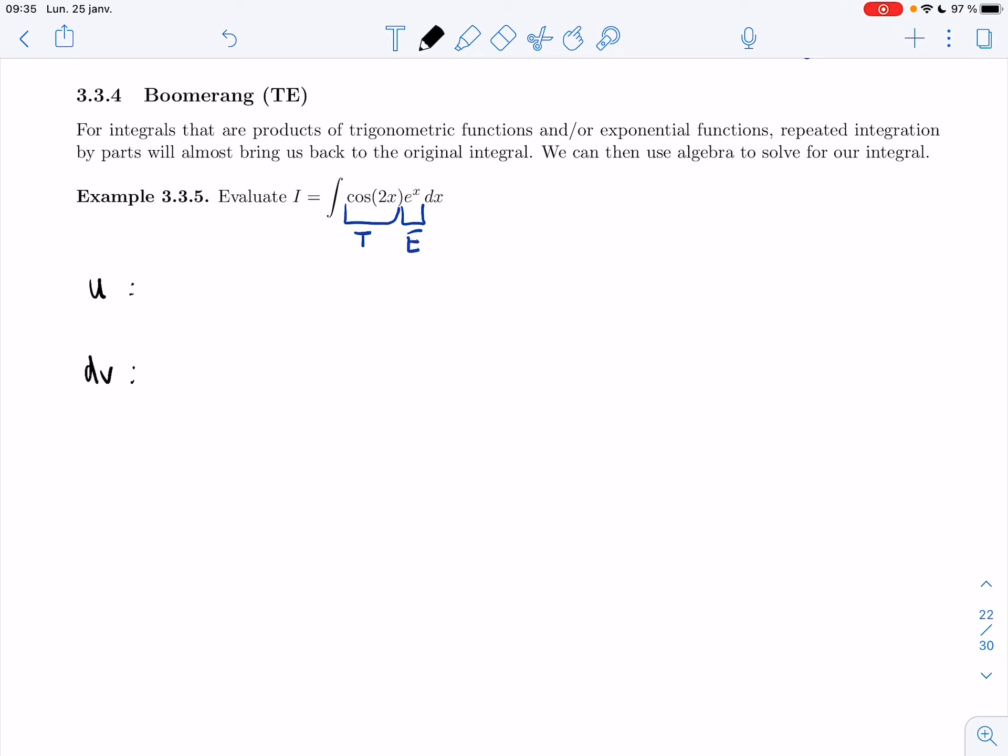I mean, t and e are on the same level. I put t before e just because it pronounced, it created a better word, light, instead of light. But they're at the same level, so it doesn't matter. Same if you have two trigs. It doesn't matter which one you pick. But you just have to pick one.